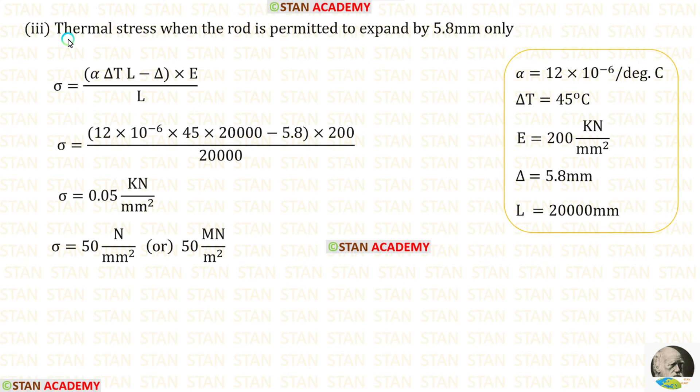Now, let us find the thermal stress when the rod is permitted to expand by 5.8 millimeter. If the supports are yielding, the formula to find the stress is alpha delta T L minus delta into E upon L.